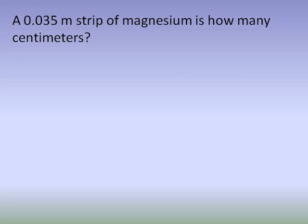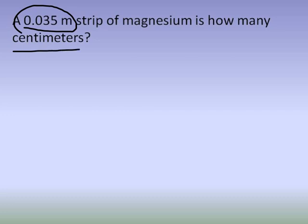Let's try one more problem — also a fairly common type from a gas laws lab later in the year. We're taking a measurement for a piece of magnesium and converting it. The given is 0.035 meters of magnesium, and we want to convert to centimeters. Our conversion is: one meter equals 100 centimeters — something many of you probably already know.